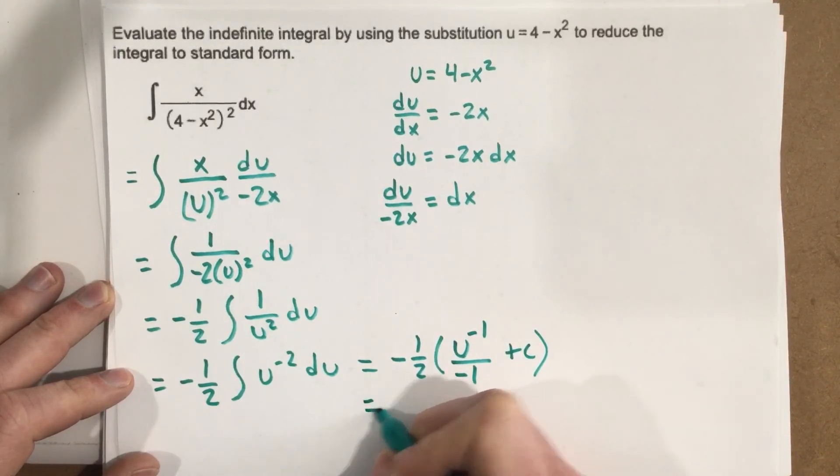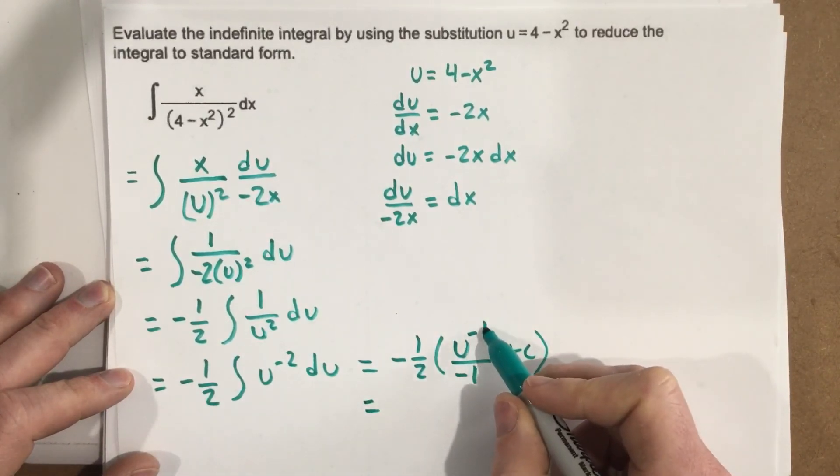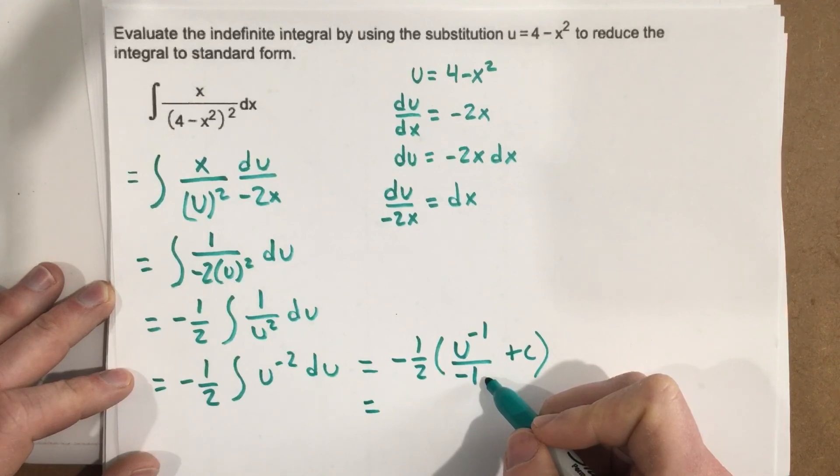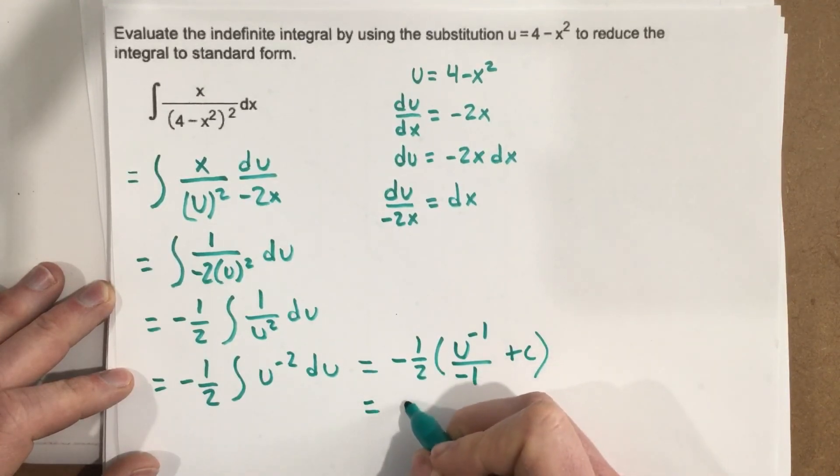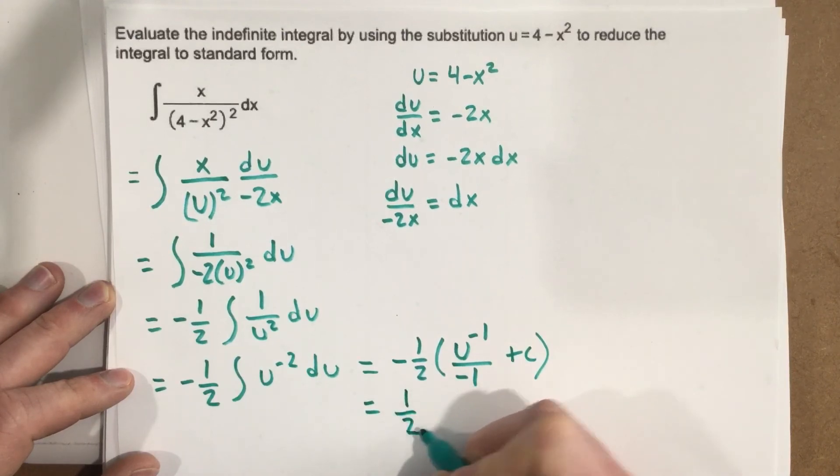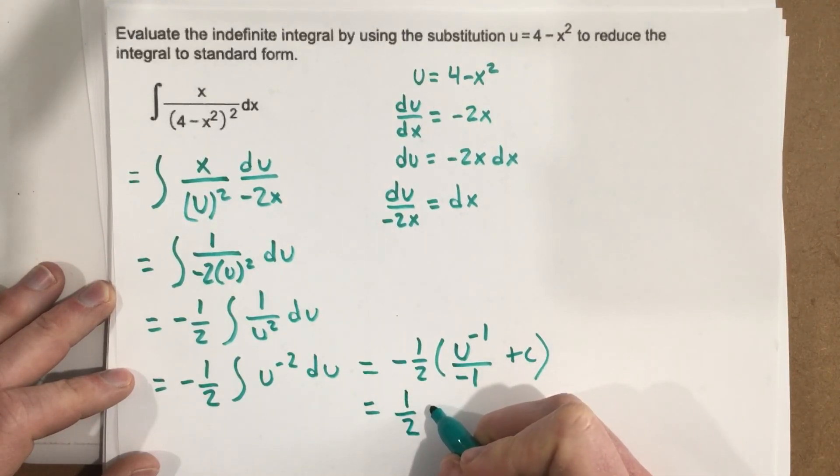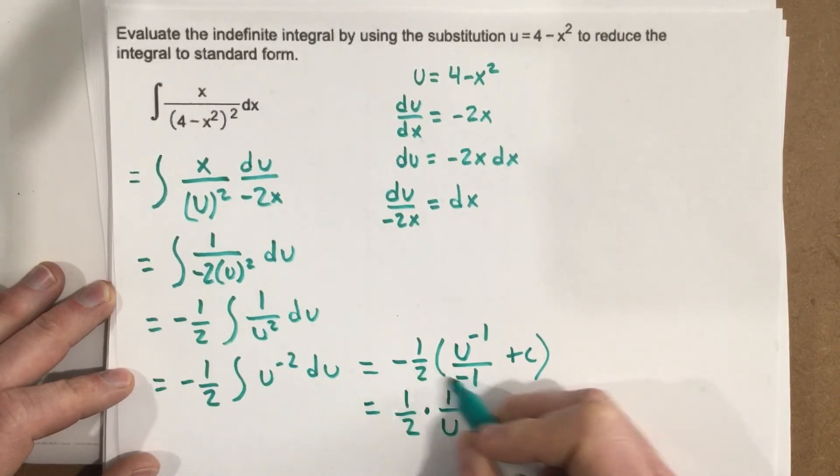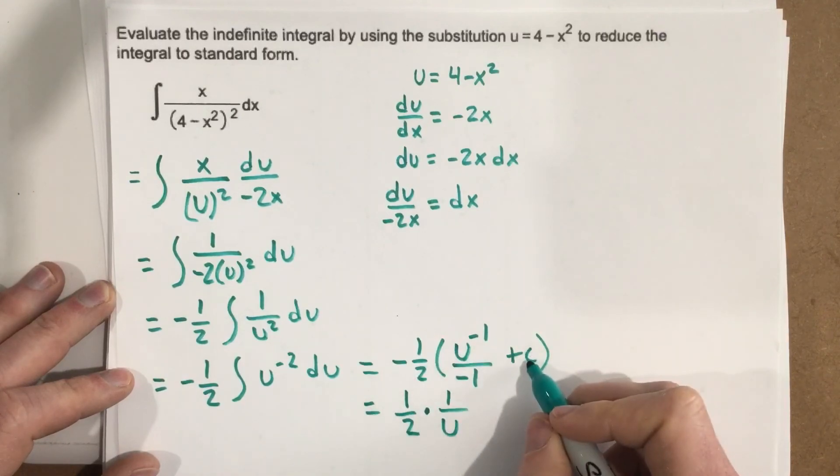So then we can move this u to the bottom, and we can distribute the negative 1 half. So that's going to be 1 half. That would be 1 half times 1 over u, because the two negatives cancel. Plus,